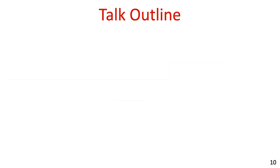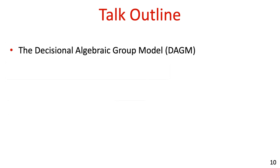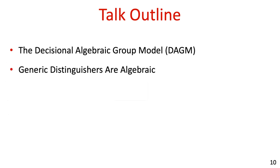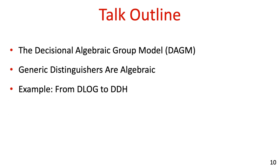The rest of this talk is organized as follows. We will start by presenting the Decisional Algebraic Group Model. Then we will see an informal explanation as to why generic distinguishers are also algebraic, meaning the DAGM is less restrictive than the generic group model. We will show a reduction from algebraically breaking DDH to breaking discrete log as an example of how the DAGM might be used, and conclude with some closing remarks.